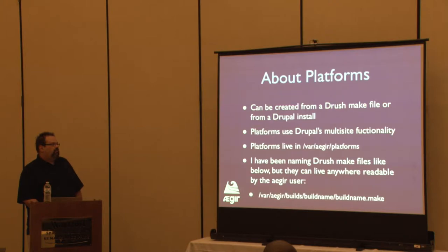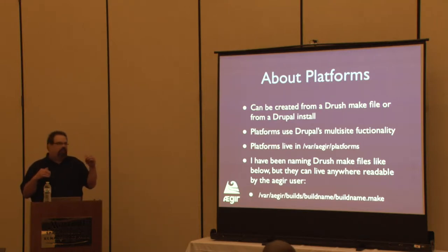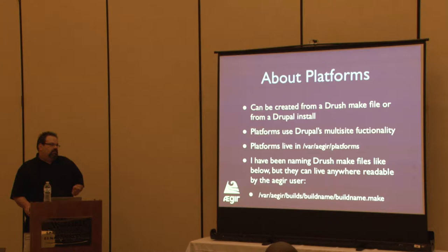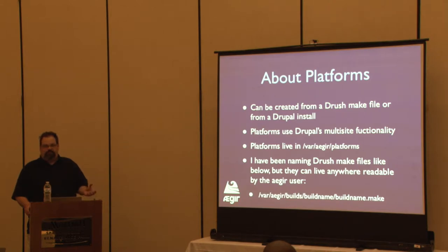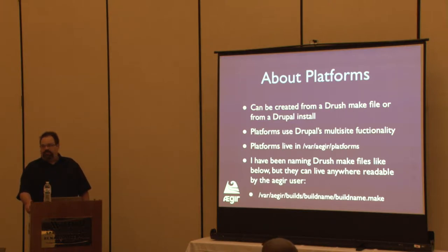As far as platforms go, you can take an existing Drupal site and drop it into the platforms folder and create a new platform. But you can also use a Drush make file. Aegir will take a make file, do whatever the make requests, and build it out under /var/aegir/platforms in a standard build. When you want to upgrade, it's as simple as deploying a new Drush make file, creating a new platform, and migrating your sites to that new platform — assuming everything works right.